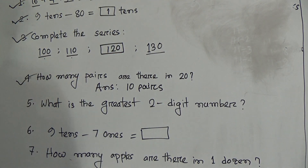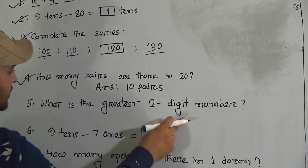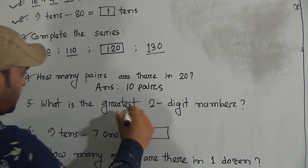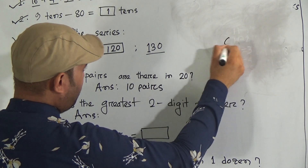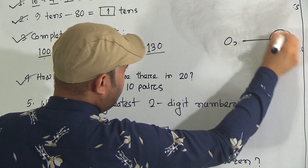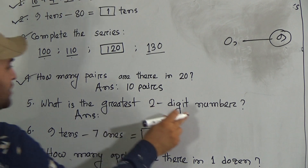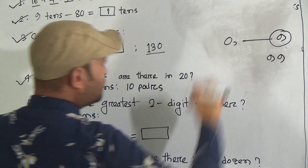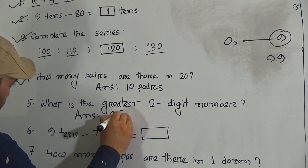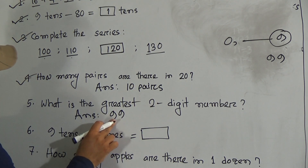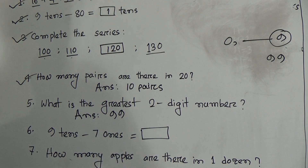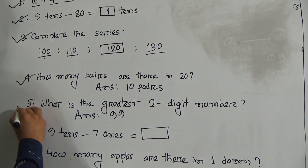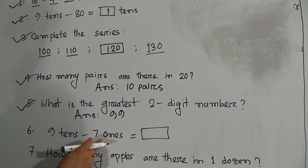Question number 5: what is the greatest two-digit number? We know that from 0 to 9, the number 9 is the greatest. So the greatest two-digit number means both digits will be 9, which gives us 99. So the answer is 99.